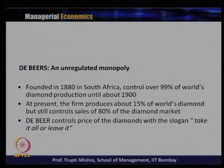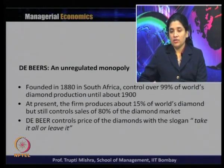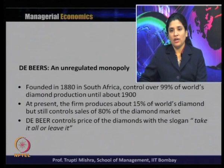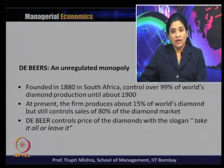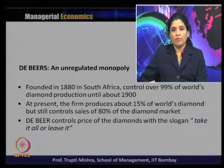De Beers is an example of monopoly in the diamond market. De Beers was founded in 1880 in South Africa and controlled about 99 percent of the world's diamond production until about 1900. At present, the firm produces 15 percent of world diamond output but still controls sales of 80 percent of the diamond market. So they produce just 15 percent but still control 80 percent of diamond sales.